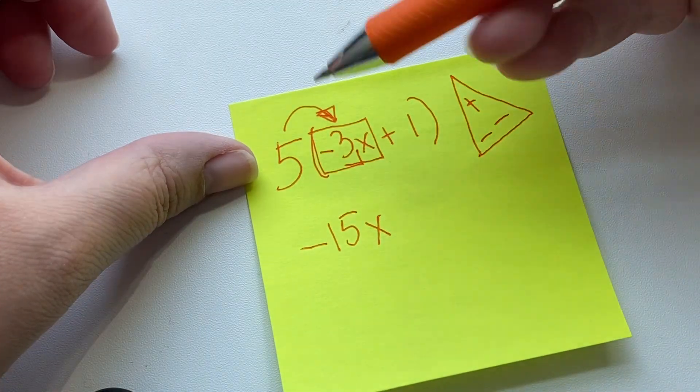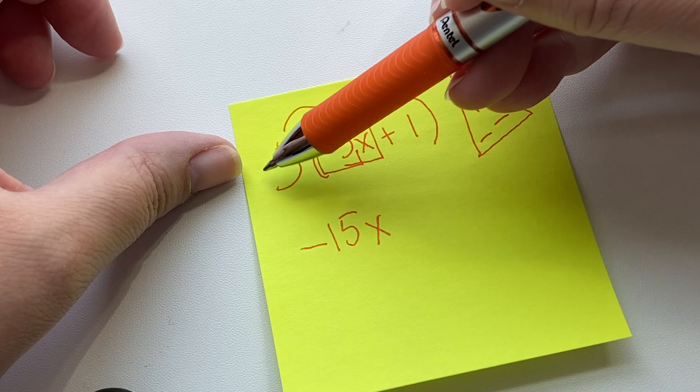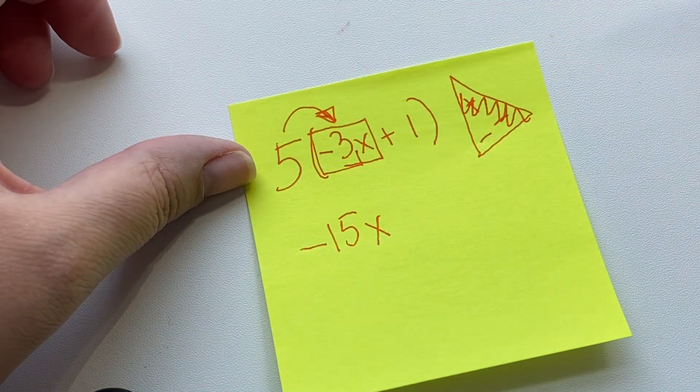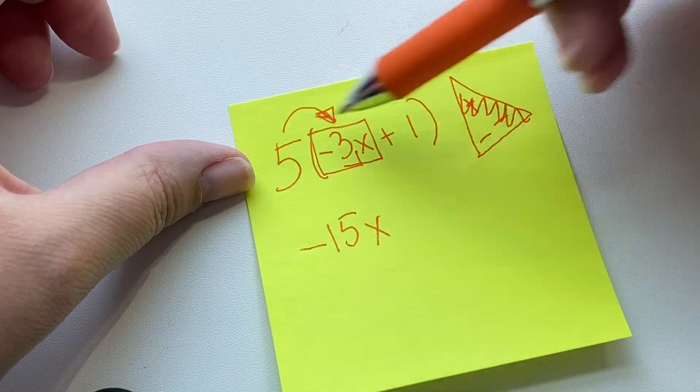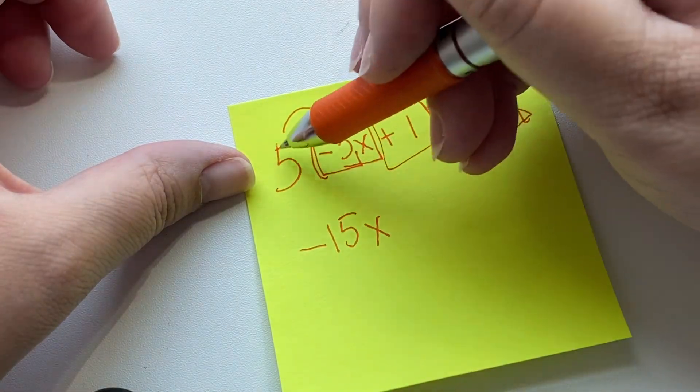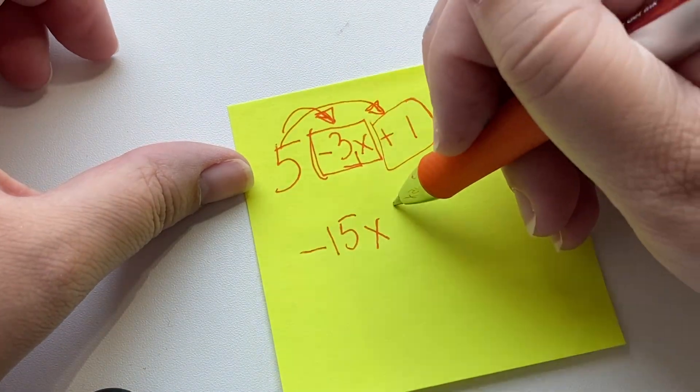Plus, minus, minus. This has a positive and a negative. So, let's scratch that out. Our result will be a negative. And then, 5 times positive 1, which is positive 5. And there you go.